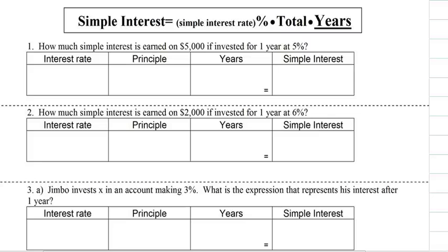All right, this is simple interest. Simple interest is the interest off of only the principal — that's it. There's no compounding going on here.